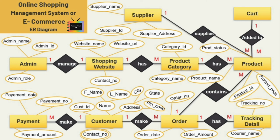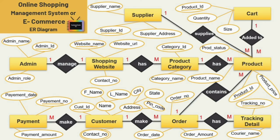Last, we have the entity cart. For this we have three attributes: product ID, quantity, and size. Product ID is the key attribute here. So this is how you can draw an ER diagram on different topics — this is just an example and you can add various entities and different attributes according to your requirements.